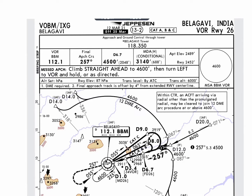In this video we will give a briefing of this approach chart. This is Belagavi, India, VOR Runway 26, issued on 12 March 2021, effective from 25th March 2021. Chart number is 13-2. Frequencies: Belagavi Tower frequency 118.35, VOR frequency 112.1, which you will set on your NAV.